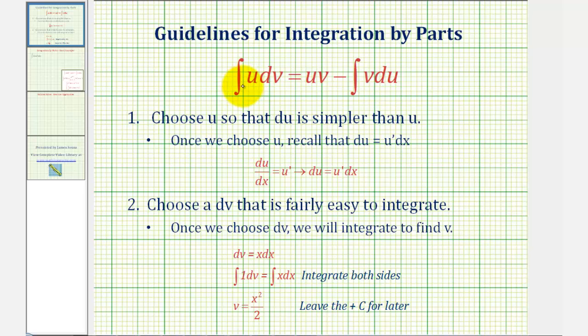When the original integral is in the form of u dv, we want to choose u so that du is simpler than u. And number two, we want to choose a dv that is fairly easy to integrate. Notice once we assign dv, we have to integrate both sides of the equation to find v.